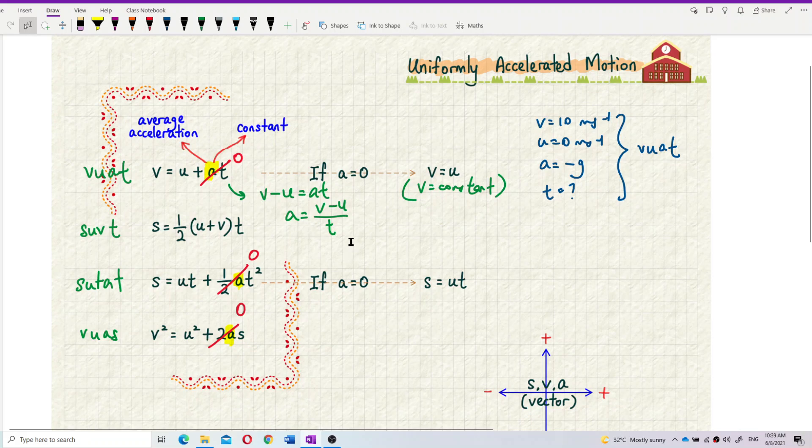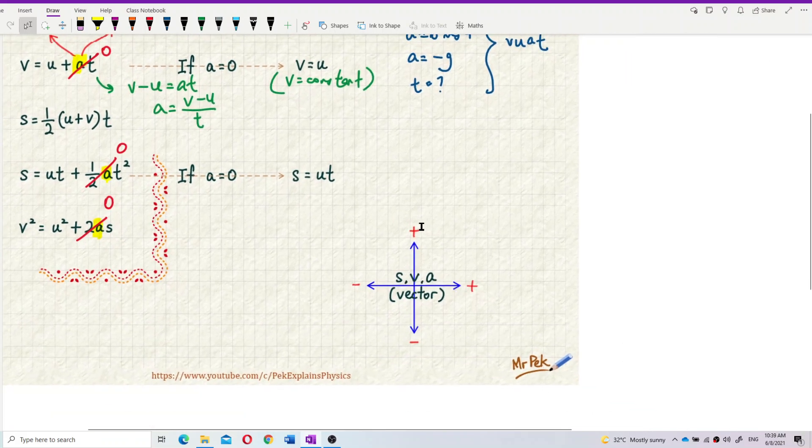Another thing is, remember, displacement, velocity, acceleration, all of them are vectors. So because they have vectors, you must put positive and negative signs to show the direction. When you substitute the value into the equations, for example, let's say the question gives you velocity going upwards.